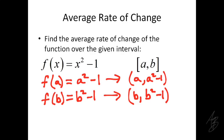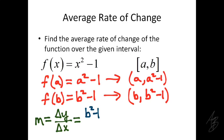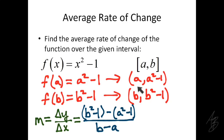Just like the last example, we're going to find the slope of the line going through those two points. Even though we don't know exactly what those points are, we can do the same thing with variables. Using the second point first, the y value of our second point is b squared minus 1, minus the y value of our first point, which is a squared minus 1, over the change in x, which is b minus a. Distributing the negative gives us a negative a squared and a plus 1, and the minus 1 and plus 1 cancel, leaving b squared minus a squared over b minus a.